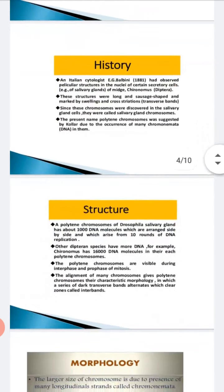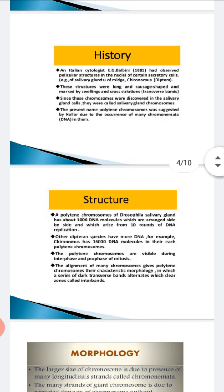Now coming to the structure. If we see the polytene chromosomes of Drosophila salivary gland, it has about thousand DNA molecules arranged side by side and ten rounds of DNA replication. Other dipteran species have more DNA. For example, in Chironomus larva, the DNA molecules number is much higher, sixteen thousand.